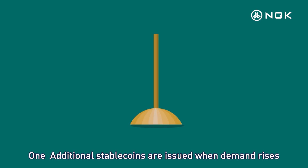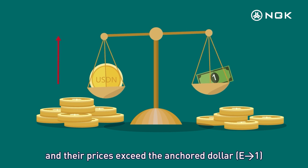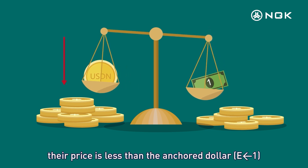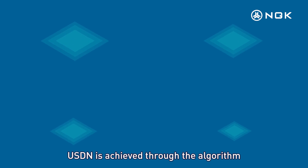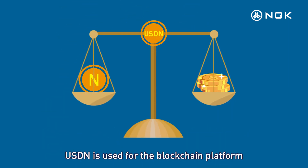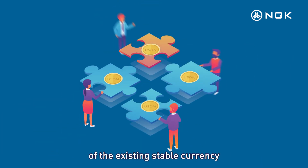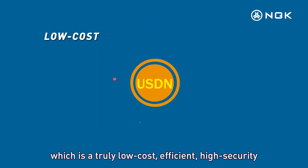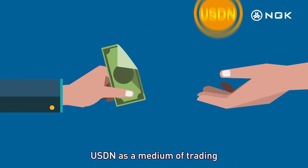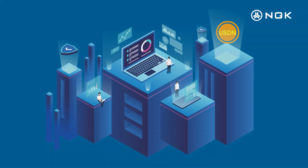Algorithm Mechanism: (1) Additional stable coins are issued when demand rises and their price exceeds the anchored dollar (E > 1). (2) Stable coins are destroyed when demand drops and their price falls below the anchored dollar (E < 1). USDN is achieved through this algorithm, abandoning the traditional mortgage model to realize better stability. USDN is used for blockchain platform value reserve and value exchange, fundamentally solving the problem of existing stable currencies. It is a truly low-cost, efficient, high-security, and highly decentralized token model, used as a medium of trading to store and convert any value across more application scenarios.